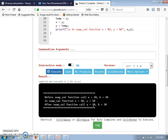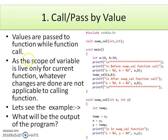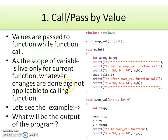Why don't the changes reflect? As already explained, the scope of the variable is only for the current function. Whatever changes we made to x and y are local to the swapVal function. That's why changes to x and y are not applicable to the calling function's variables a and b.